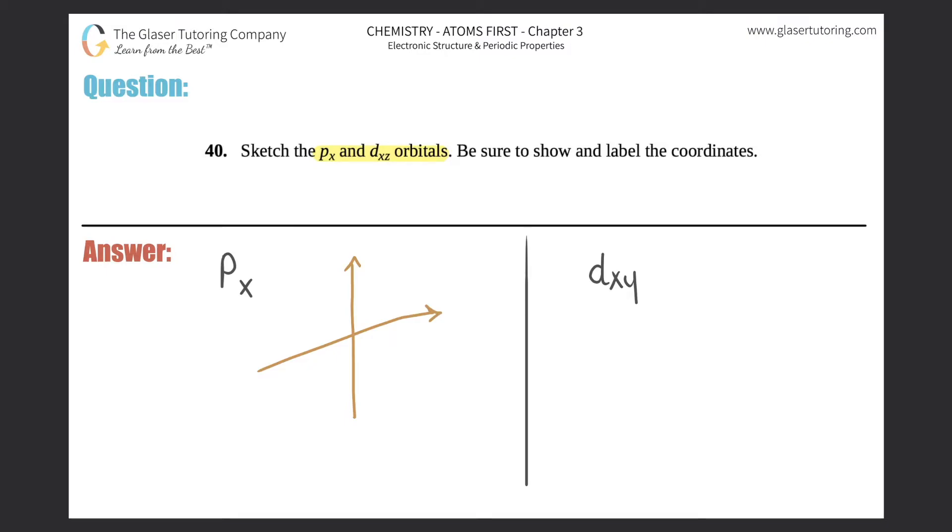Usually when you're drawing the p orbital, they draw the x as a straight line. So it would be something like this. This would be the z - it's a little bit different. This is the y and this is the x. Let me make this a little bit more straight for you.